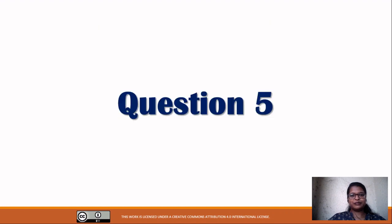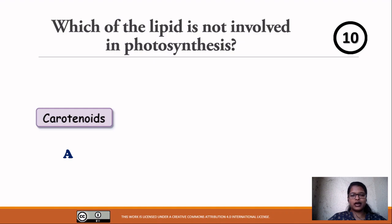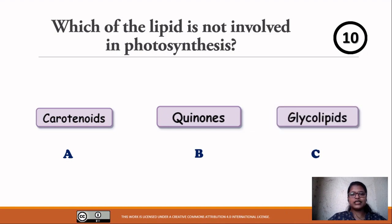Time is up. Question number five: Which of the lipids is not involved in photosynthesis? Your options — option A: carotenoid, option B: quinone, option C: glycolipid. Time starts now.